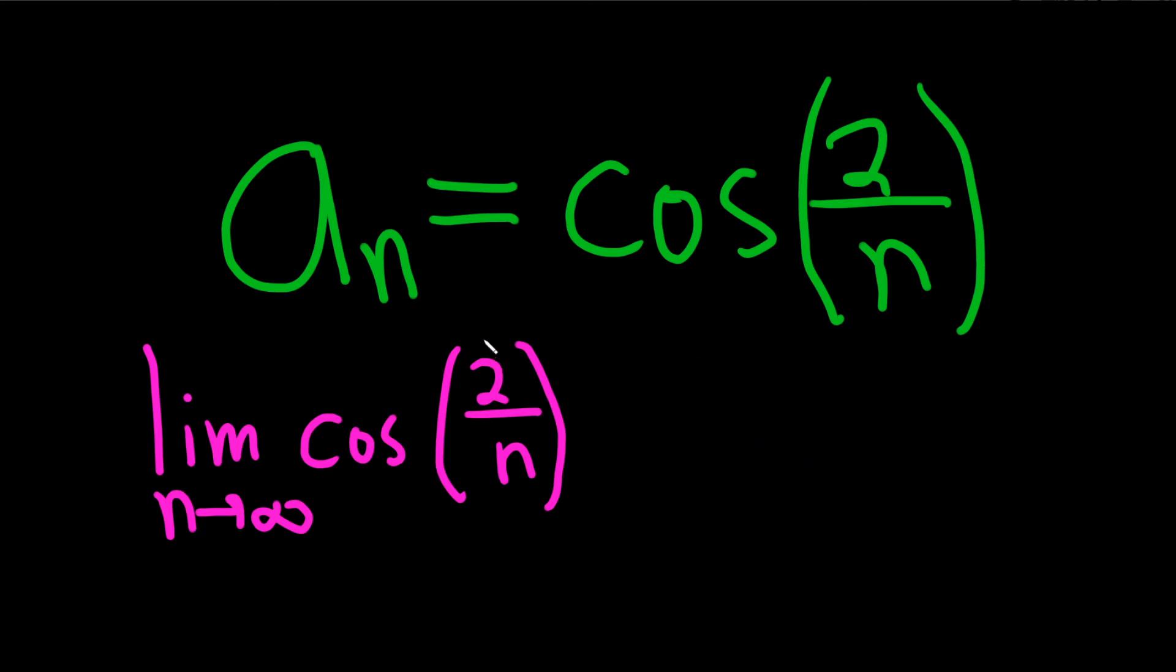So to do this we just have to use our intuition. So as n approaches infinity, 2 over n, well it's a fraction and it's getting smaller because the bottom is getting bigger. So this fraction is going to approach 0. So this will be equal to the cosine of 0.